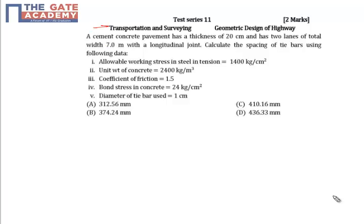This question is from Transportation and Surveying, from the topic of design of rigid and flexible pavements. It carries two marks. In this question, a cement concrete pavement has a thickness of 20 centimeters and has two lanes with total width 7.0 meters with a longitudinal joint. Calculate the spacing of tie bars using the following data.